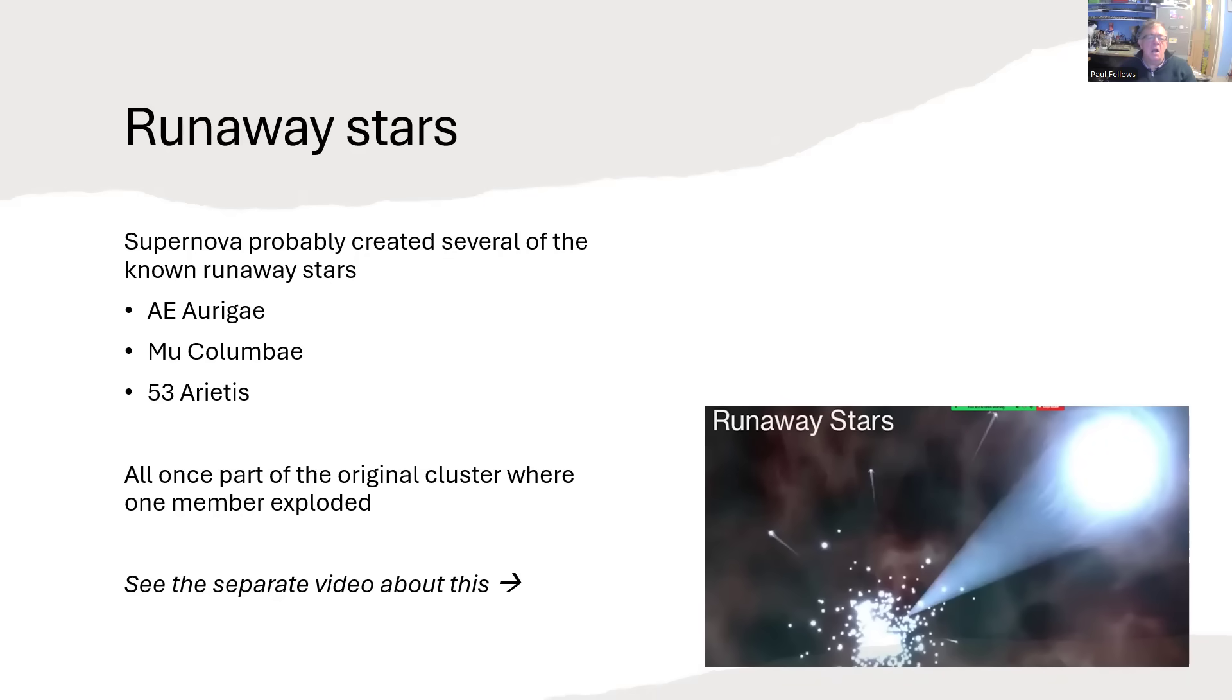That we think are travelling away from this explosion, hurled out by the violence of it. They were all once part of a cluster formed in and around Iota Orionis. And one of the members of that grouping blew up 2 million years ago, created Barnard's loop and sent the material hurtling outwards and caused these stars to become runaways charging away in different directions that all point back to this explosion.